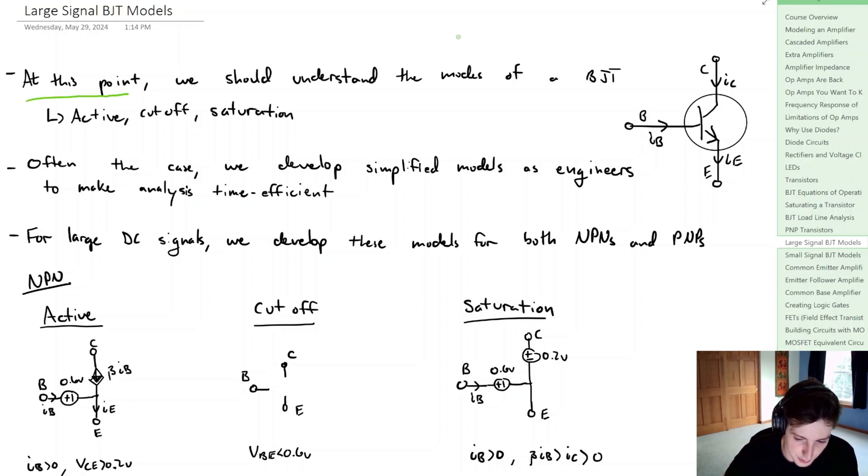At this point in the course we should understand the modes of a BJT. Those modes will be the active, cutoff, or saturation mode, and that carries through whether you have an NPN or a PNP.